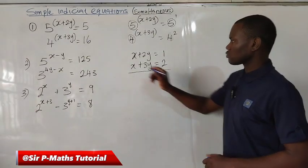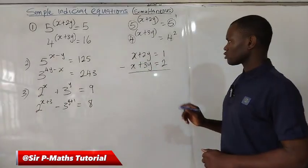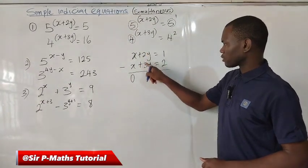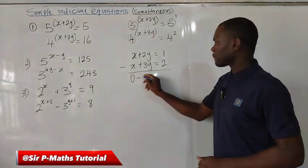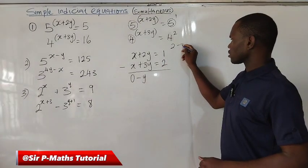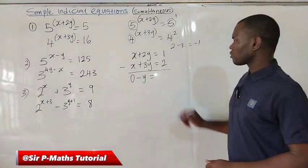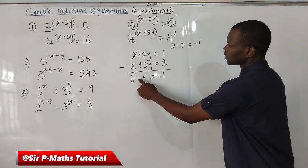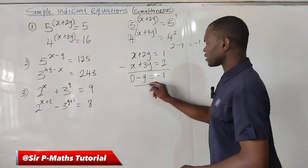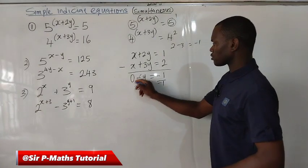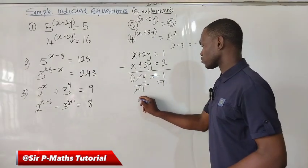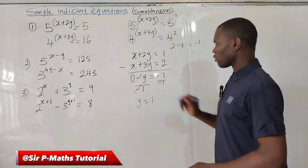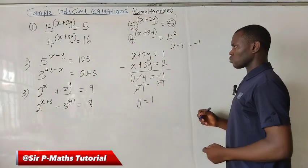So let's subtract — we are using the elimination method. x minus x gives 0. 2y minus 3y gives minus y. Since 2 minus 3 is minus 1, we have minus y equal to 1 minus 2, which is minus 1. Then eliminate the negative sign by dividing both sides by negative 1, so minus cancels minus and y equals 1.